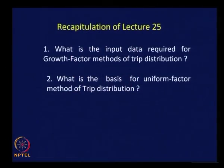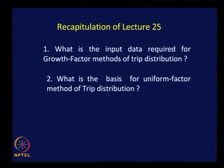The input is very elaborate — we try to manipulate the matrix to get the horizon year matrix. The next question: what is the basis for the uniform factor method of trip distribution? What assumption do we make in this method? As the name implies, we assume uniform growth for the whole of the urban area — a uniform growth rate for each of the traffic zones. Based on this assumption, we work on the uniform growth factor method of trip distribution.